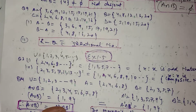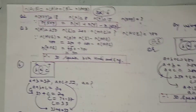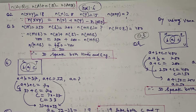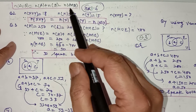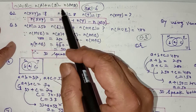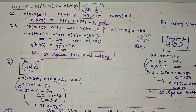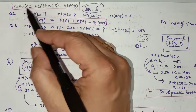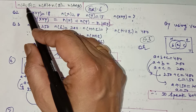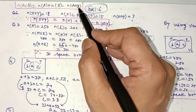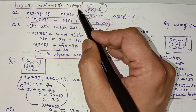This is Exercise 1.5, in which we find complements only. Now in Exercise 1.6, based on the cardinal number formula — which we discussed in the basics — the cardinal number formula is: |A∪B| = |A| + |B| − |A∩B|. In question number 1, you directly replace the given values. The cardinal number of A is given, the cardinal number of B is given, the cardinal number of the union is given, and you have to find the cardinal number of A∩B.